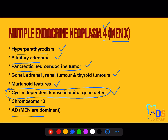Key exam questions include: what is common between 2A and 2B, what features are seen in Sipple syndrome, features of MEN4, chromosome numbers for each type, and mode of inheritance (autosomal dominant for all). A regularly asked question: which type of thyroid carcinoma is most commonly seen in MEN syndrome? The answer is medullary carcinoma, seen as a common feature in both 2A and 2B. Pheochromocytoma is also common to both 2A and 2B.